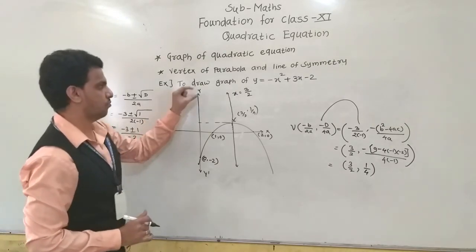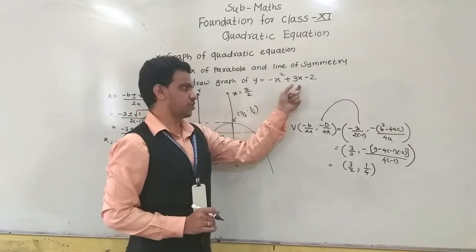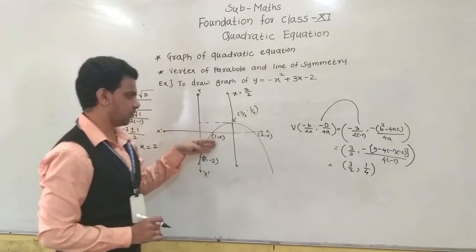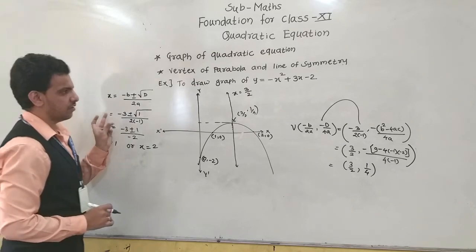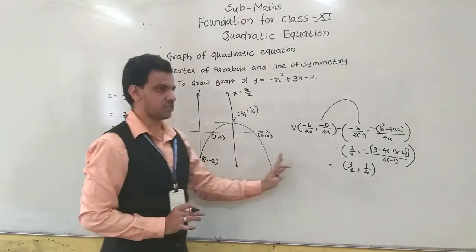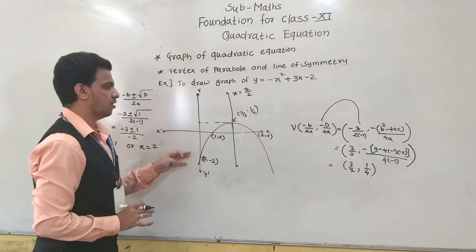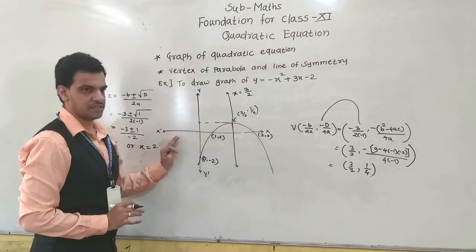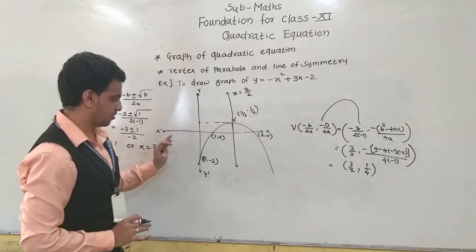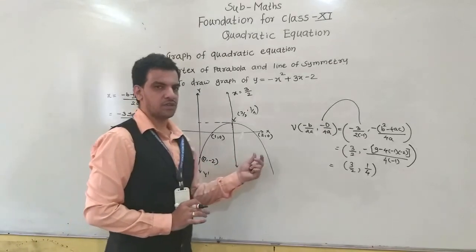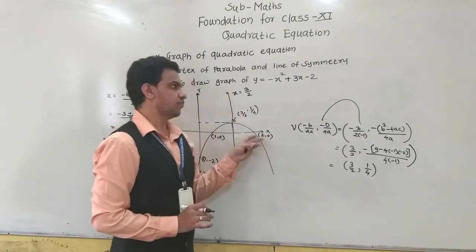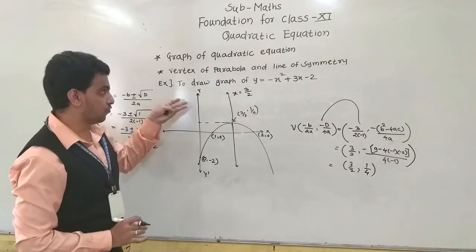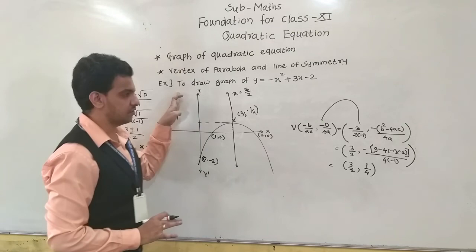From a quadratic equation, we can find the vertex, equation of line of symmetry, and roots. Using all this information, we can draw the graph of a quadratic equation. This is the basic concept of quadratic equations useful for class 11.